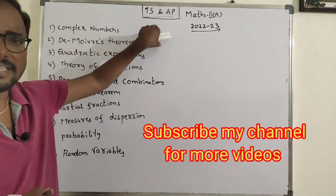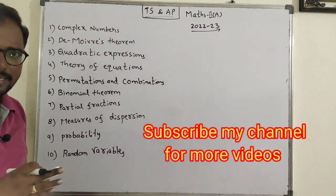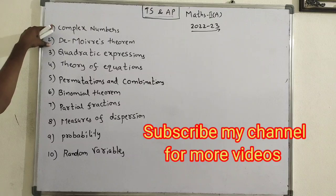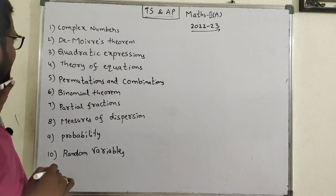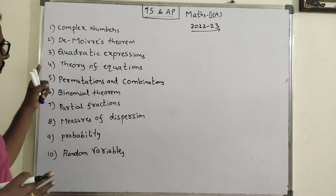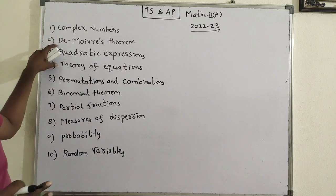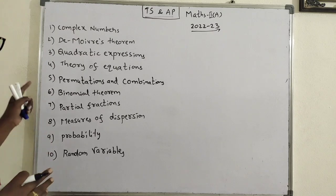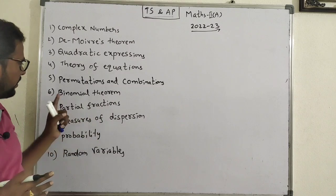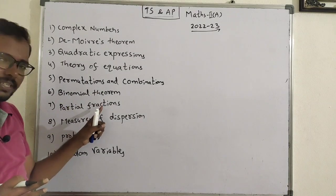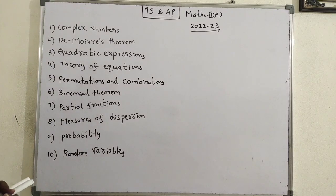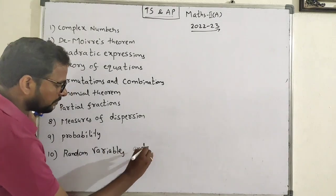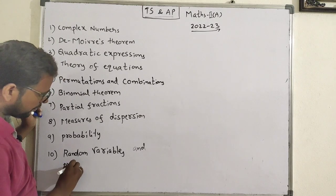First, the Math 2A syllabus. First topic: complex numbers. Second topic: De Moivre's theorem — these two are similar and easy. Third topic: quadratic expressions. Fourth chapter: theory of equations — these two chapters are also similar. Fifth chapter: permutations and combinations. Sixth chapter: binomial theorem. Seventh chapter: partial fractions. Eighth chapter: measures of dispersion. Ninth chapter: probability. Tenth chapter: random variables and probability distributions.